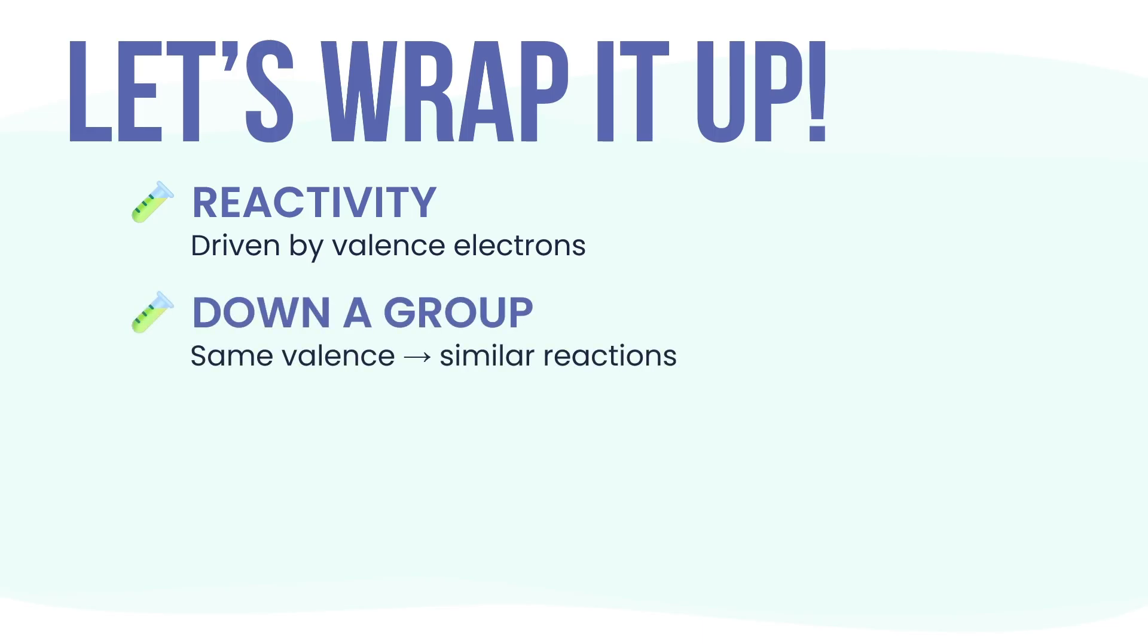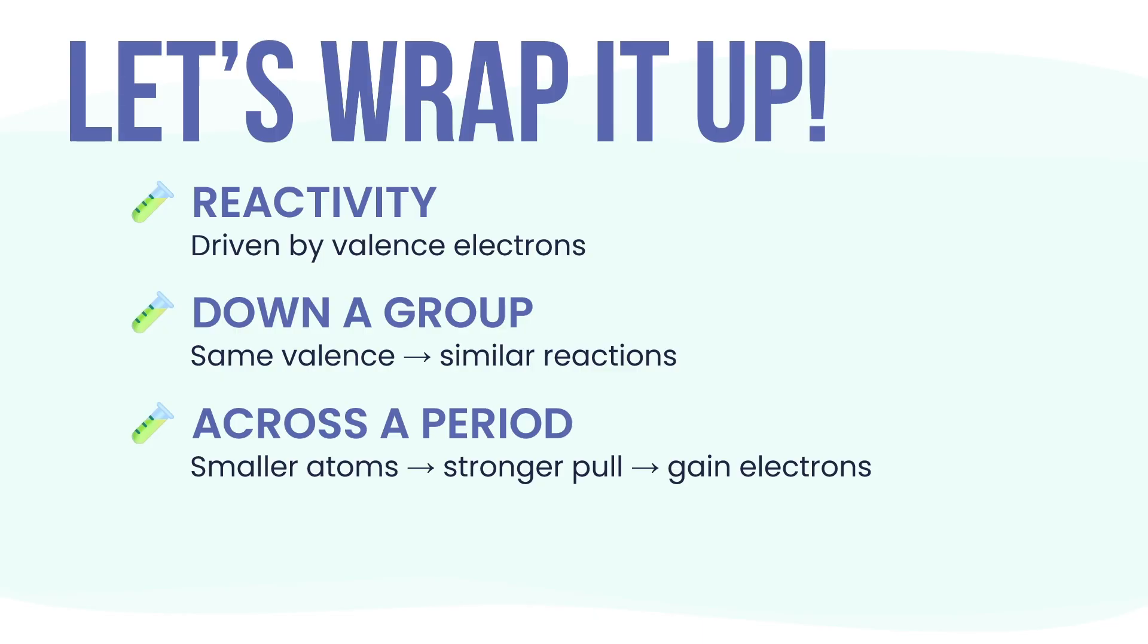So what drives reactivity? It starts with valence electrons, those on the outer shell. They decide how easily an atom can give, gain or share. That's why atoms in the same group are chemical copycats. They have the same number of valence electrons so they react in similar ways. Across a period, atoms get smaller. The nucleus pulls harder so reactivity shifts from losing electrons to gaining them. In the end, all atoms are chasing the same goal - a full outer shell. And that's the chemistry behind the copycats.